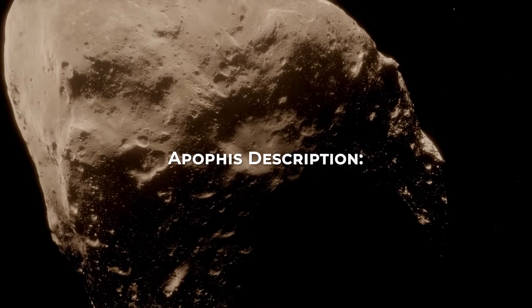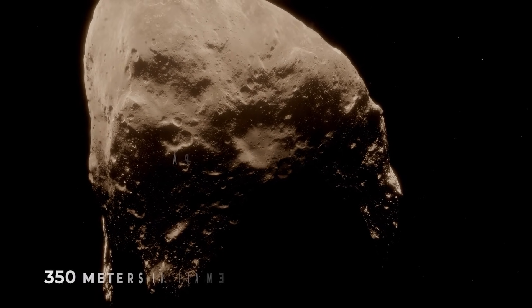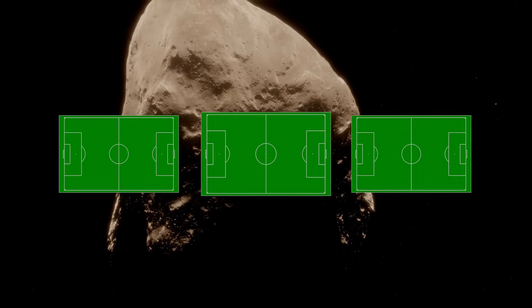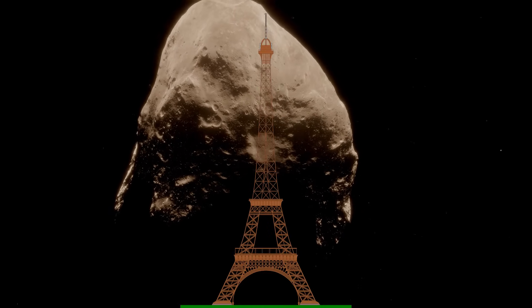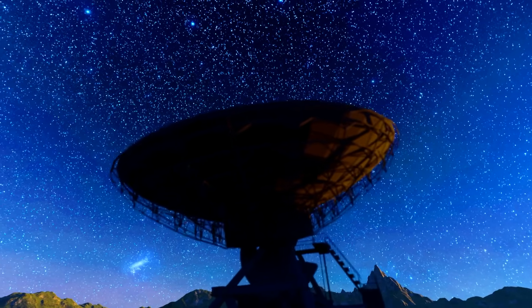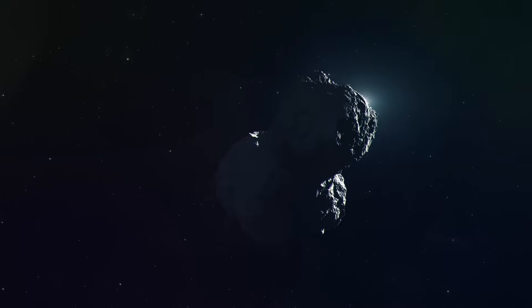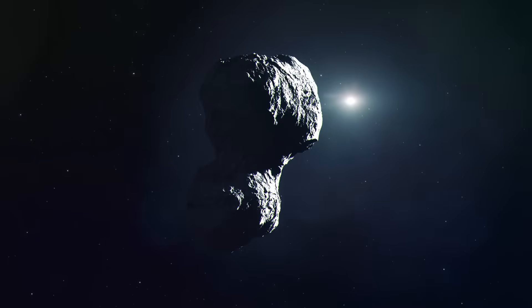Apophis, an immensely large asteroid, is estimated to be about 350 meters in diameter, equivalent to the length of three football fields, or slightly larger than the Eiffel Tower. Previous radar observations have shown that Apophis has a distinct shape resembling a peanut or two connected lobes. This shape is quite common among larger near-Earth asteroids, with approximately one in every six asteroids displaying this bilobed appearance.